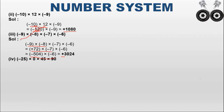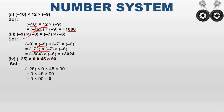Next: minus 25 into 0 into 45 into 90. First, minus 25 into 0 equals 0 — any number multiplied by 0 is 0. Then 0 into 45 equals 0, and 0 into 90 equals 0. The final answer is 0.